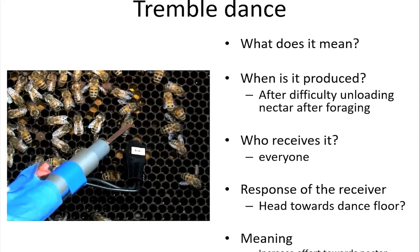In that triangle of tasks I mentioned — foraging, nectar and honey production, and comb building — comb building is not terribly well understood. It's not as well understood as the other aspects of the problem.